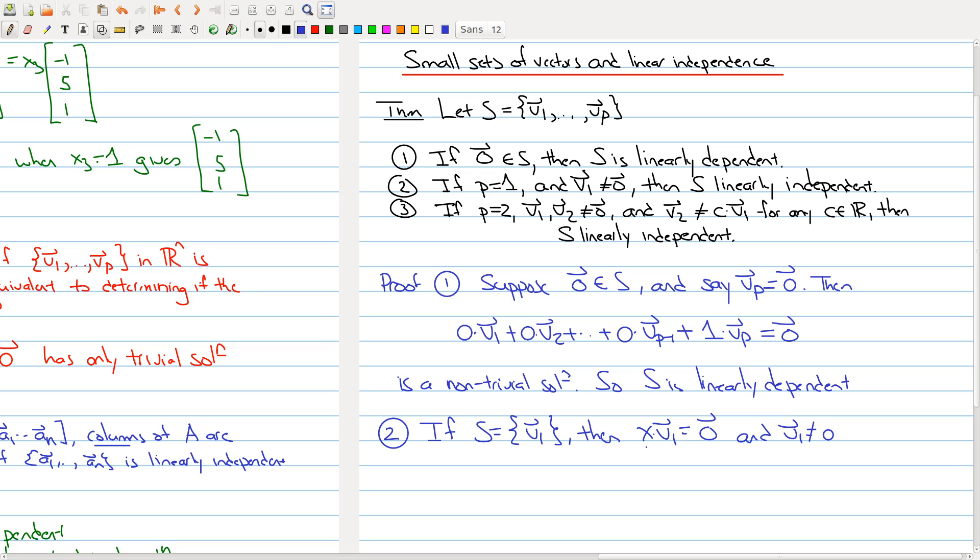then X₁ times V₁ equals zero, and the fact that V₁ doesn't equal to zero. We're looking at this equation X₁ times V₁ equals zero, and we know that V₁ is non-zero. Then it has only the solution X₁ equals zero, i.e., the trivial solution. So there's no linear combination of a single vector that will give you the zero vector unless you multiply it by zero.